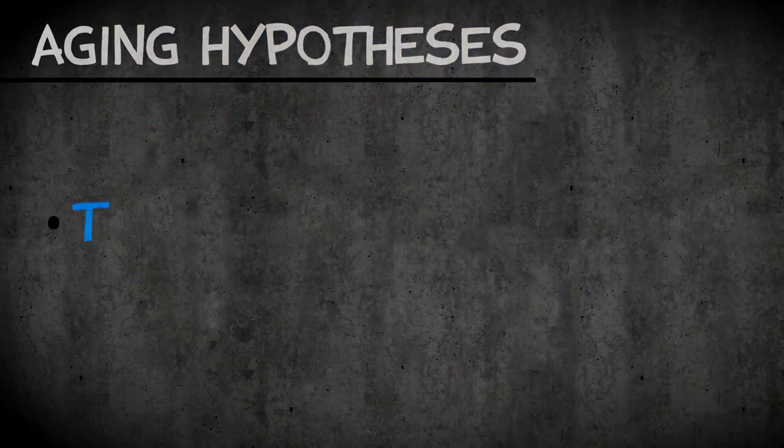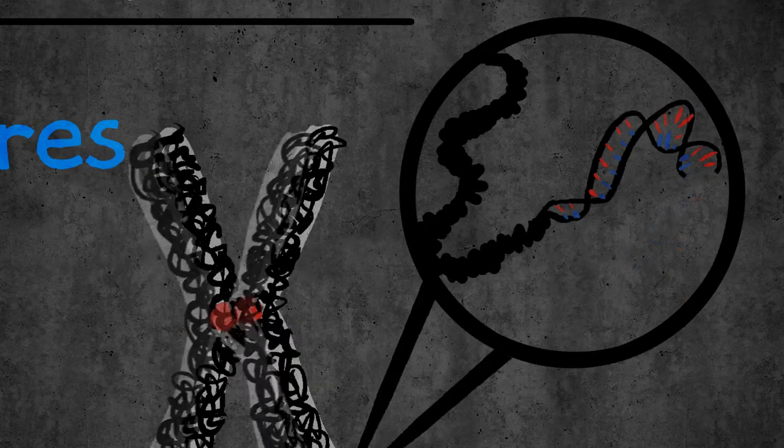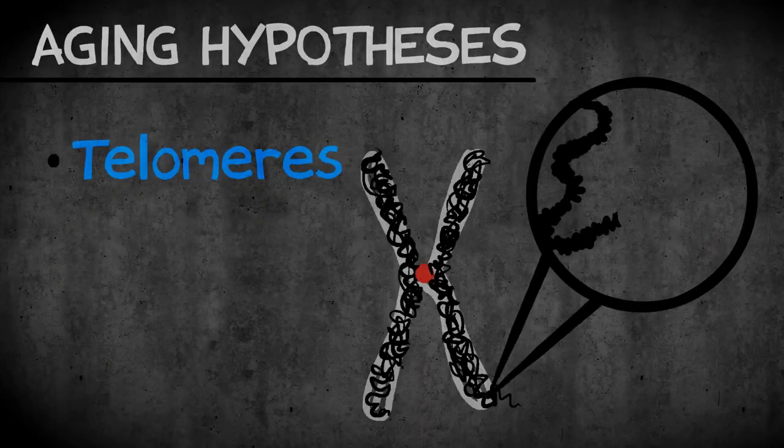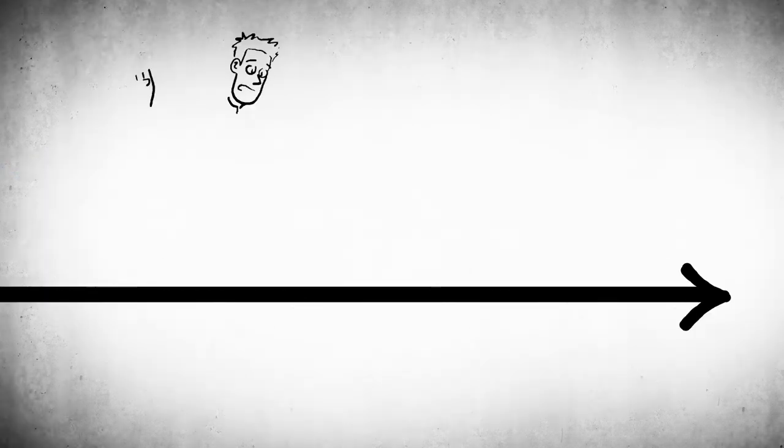There's also things like the telomeres. Telomeres are the tips of chromosomes, and they shorten with cell division. But because it occurs with age as well, people say maybe this drives the process of aging.